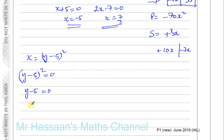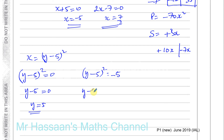If (y minus 5) squared equals minus 5, then taking the square root gives y minus 5 equals plus or minus the square root of minus 5. This is undefined — you can't find the square root of a negative number — so there are no real solutions from this case.